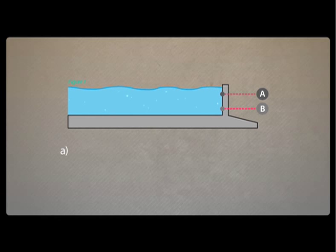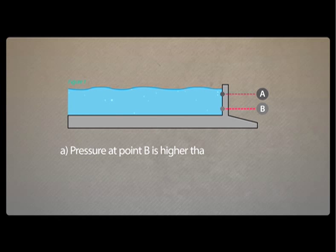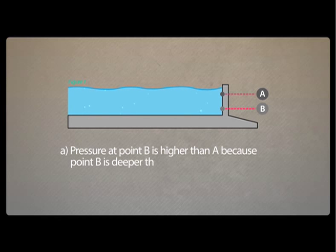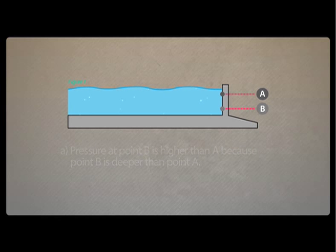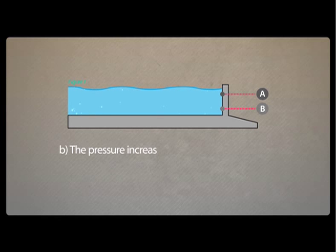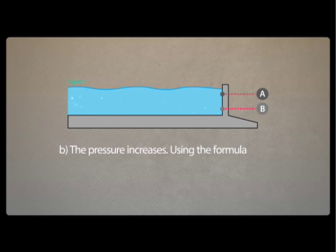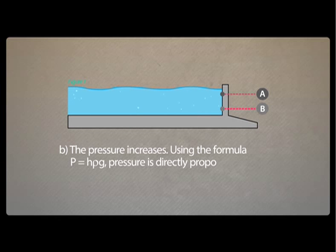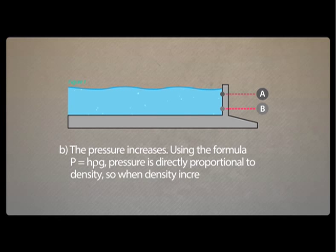For part A, the pressure at point B is higher than point A. This is because point B is deeper than point A. The answer for part B is the pressure increases. Using the formula P equals H rho G, pressure is directly proportional to density. Therefore, when the density increases, pressure increases.